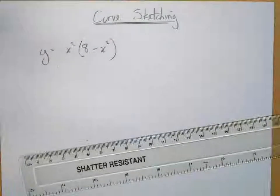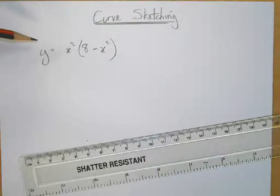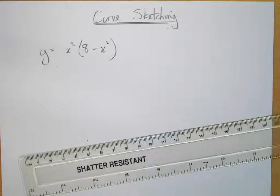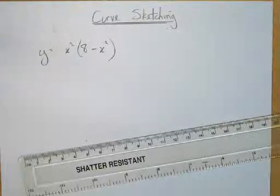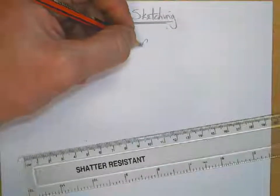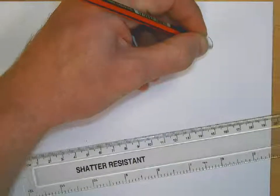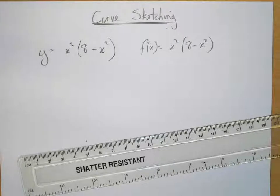Today I'm going to show you how to curve sketch. The aim of the tutorial is to show you how to find the x and y intercepts, how to find the turning points and the nature of the turning points, and then actually to sketch the function. This is our function: y equals x squared brackets 8 minus x squared. You might also see it written as f of x equals x squared times 8 minus x squared — both mean exactly the same thing, just different ways of writing the function.